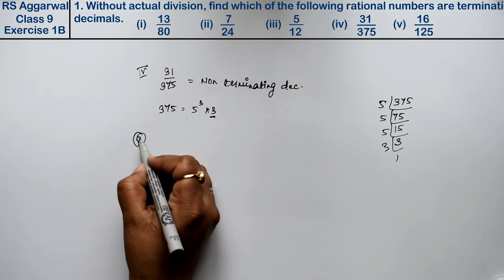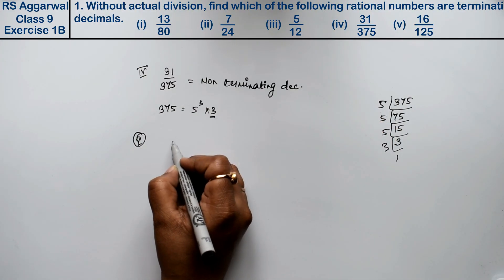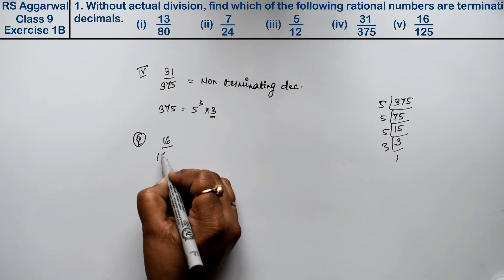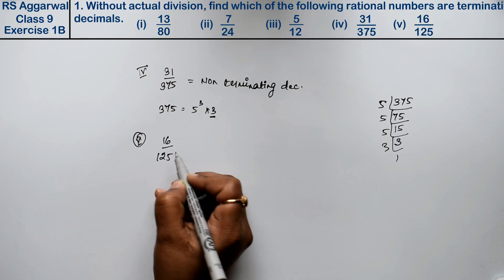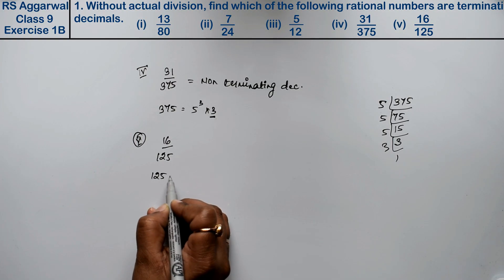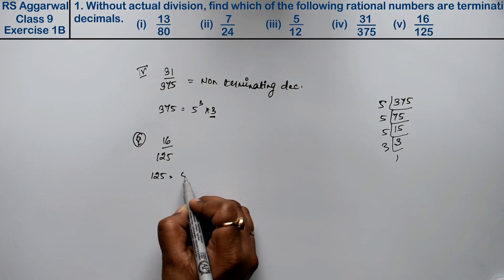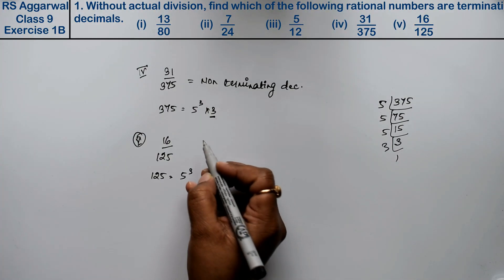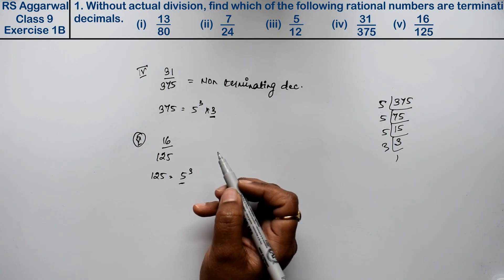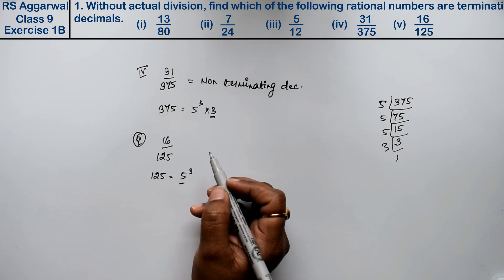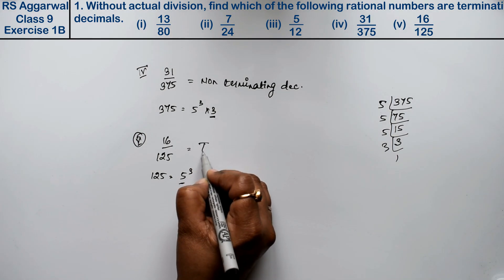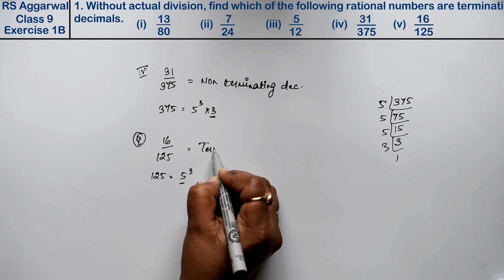Let's do the last part. The last part is 16 upon 125. What can we write for 125? We have 5 to the power 3. The denominator contains only 2s and 5s — both are in those terms. Hence, it's a terminating decimal.